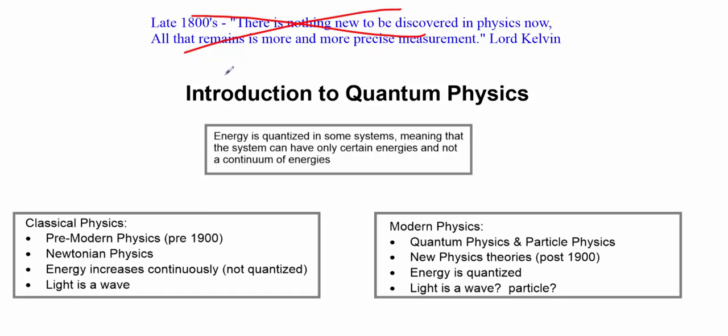When we talk about modern physics, at least the next several video lessons, we're really talking about quantum physics, or at least the introduction to quantum physics. So I'm going to try to spend some time explaining what quantum means and why we were able to determine that some things do have a quantum-like effect. Energy is quantized in some systems. What does that mean? It means that the system can only have certain energies and not a continuum of energies.